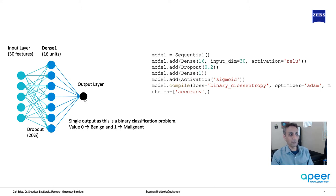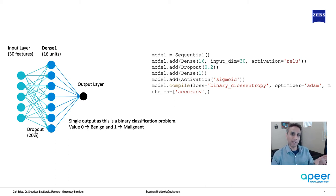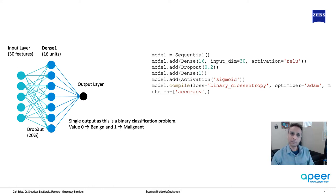With 16 hidden units, our output will be a single output. Between the input and the dense layer, let's randomly drop 20% of connections — I'm randomly dropping 20% of the connections. I'll explain what dropout is and why we need it in one of the upcoming tutorials, but for now think of this as something that helps generalize the model so it doesn't overfit for this specific data.